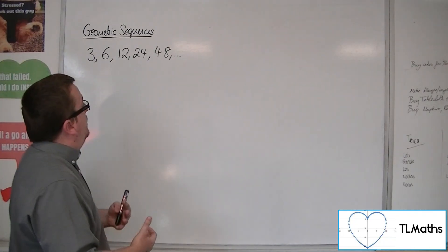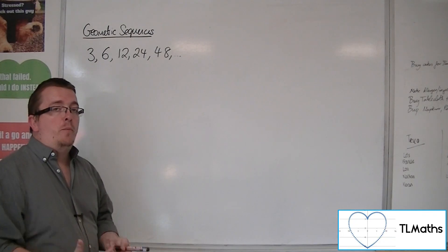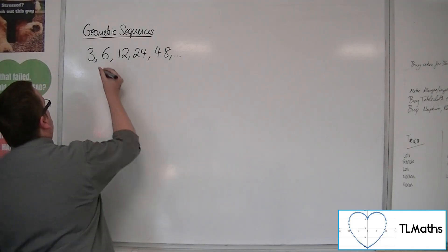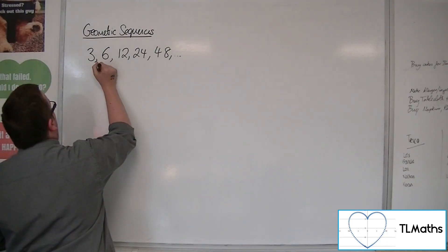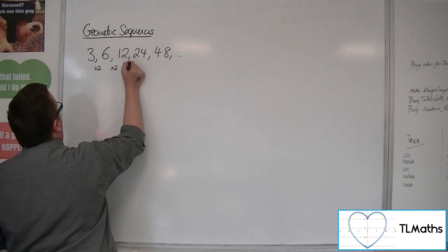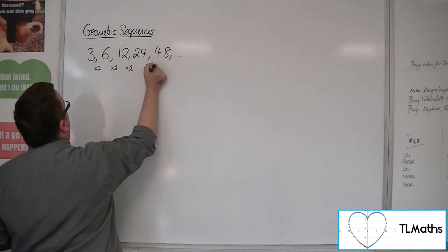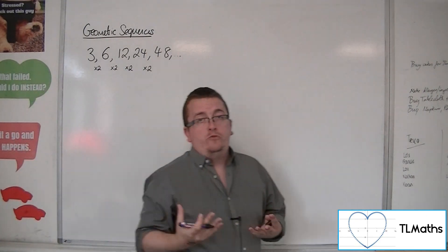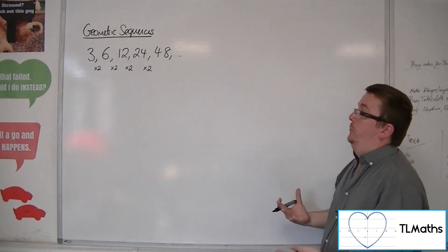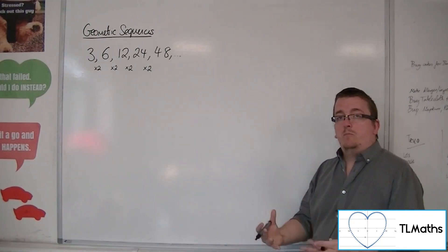And so what we say is that this sequence has a common ratio, and that ratio is the number that in this case we're multiplying by each time. So we would say that the common ratio is 2, because we're doubling the number each time.